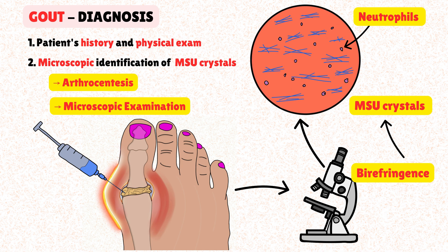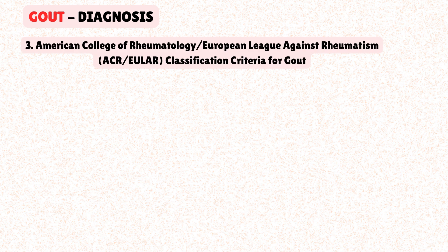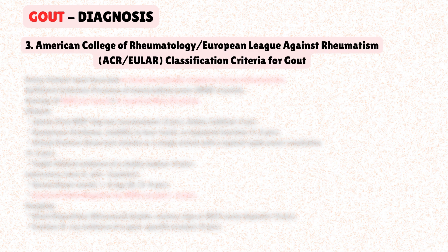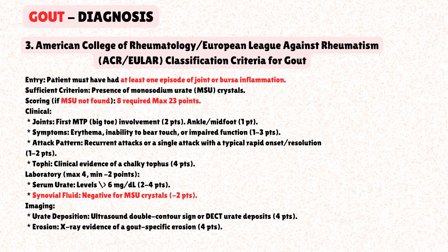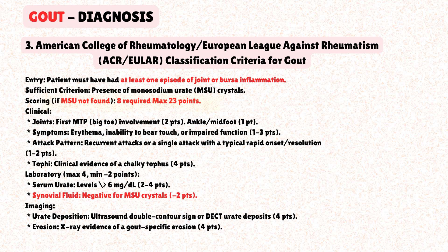In clinical practice, when synovial fluid analysis isn't feasible, the 2015 American College of Rheumatology / European League Against Rheumatism classification criteria for gout are a valuable tool. This is a point-based system using clinical, laboratory, and imaging features. The patient must have at least one episode of peripheral joint swelling, pain, or tenderness. A score of eight or more out of a possible 23 points classifies a patient as having gout, providing a standardized, evidence-based approach when definitive crystal analysis isn't an option.